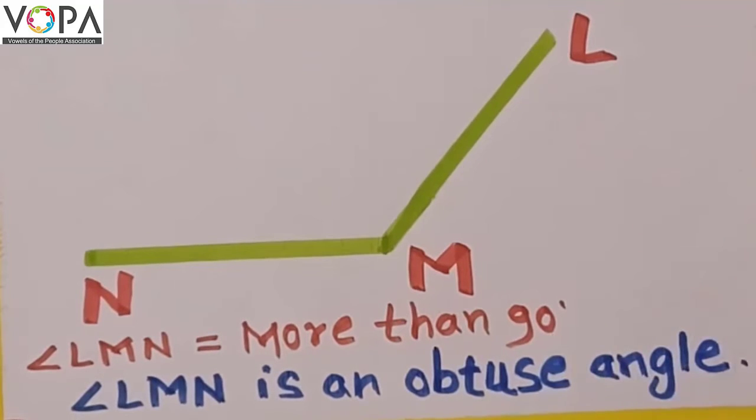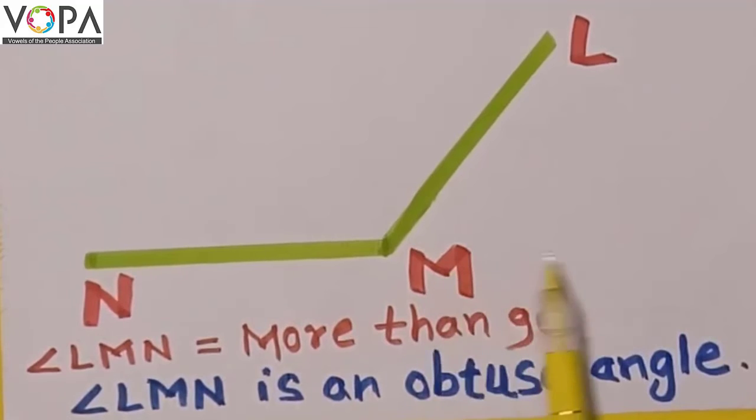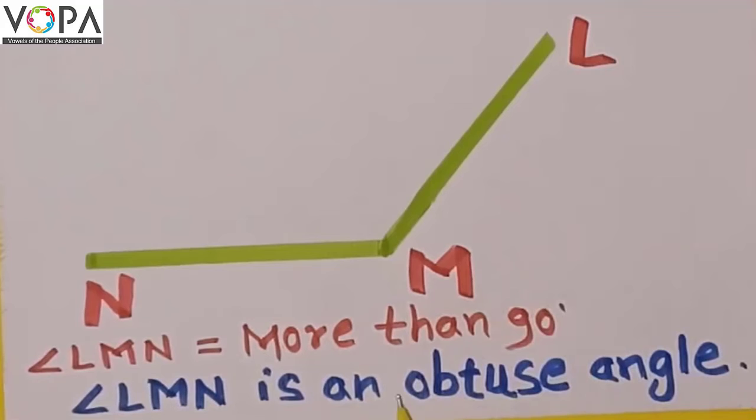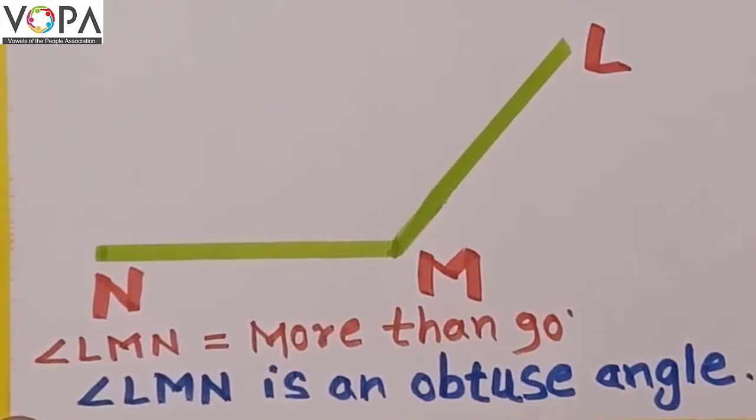An angle which measures more than 90 degrees or a right angle is called an obtuse angle. Okay, do you understand? Now solve the assignment. Bye.